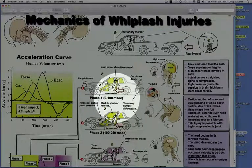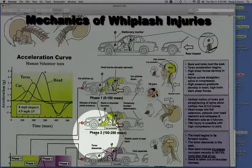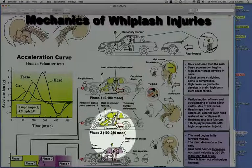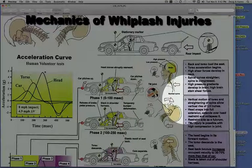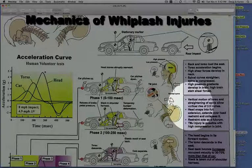Phase two, going from one tenth of a second to a quarter of a second, we get vertical motion of the torso, straightening of the spine allowing a vertical rise of up to three and a half inches. The head snaps into full extension, extending usually over the head restraint and collapsing that head restraint.